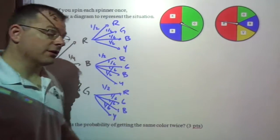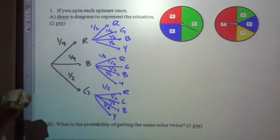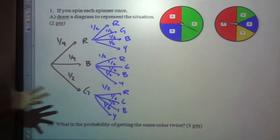Hello and welcome to problem number one on conditional probability. It asks to draw a tree diagram here for these two spinners.